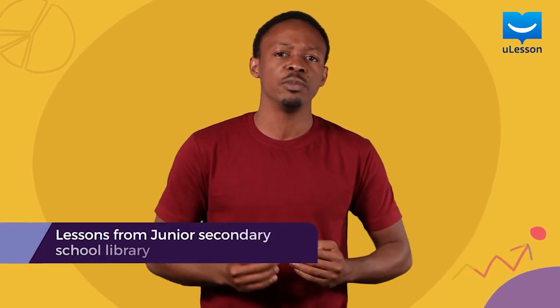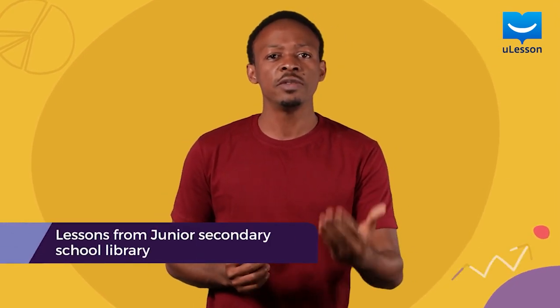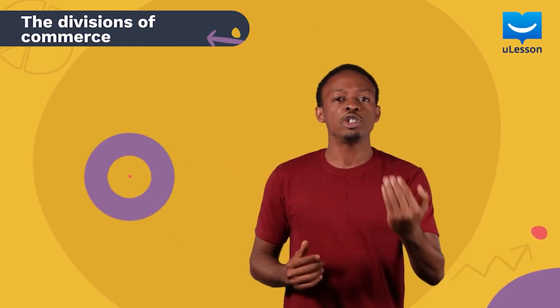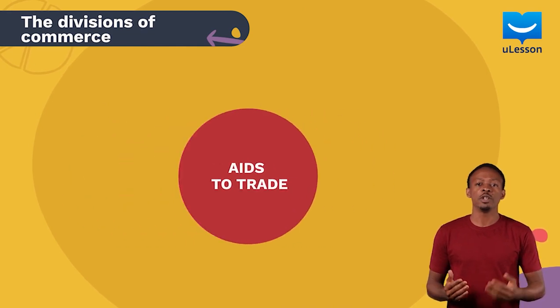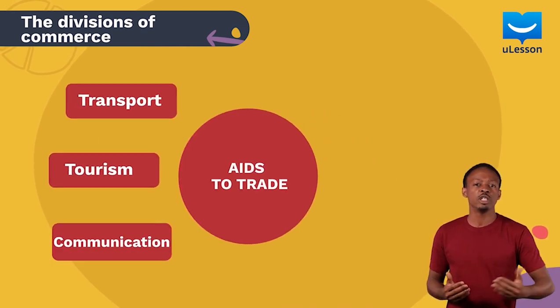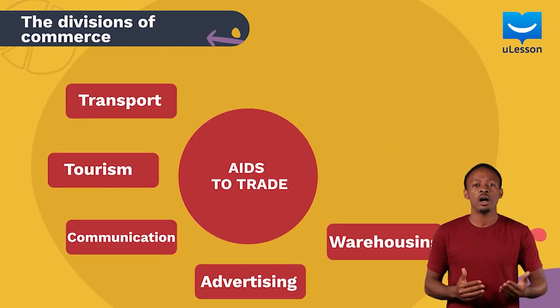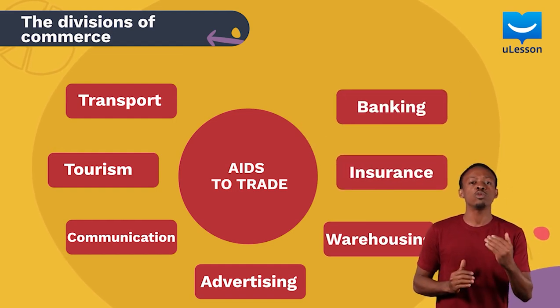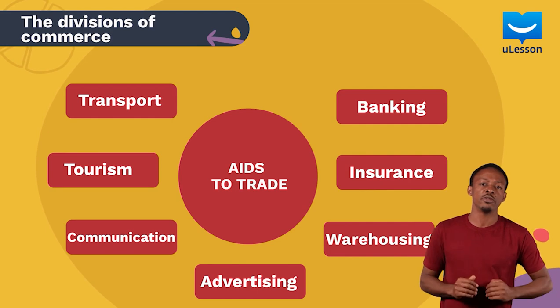Commerce, as we said in a previous lesson, involves all the activities that are involved in the buying and selling process, and all the activities at every stage become a source of livelihood for someone. Now who remembers all the divisions of commerce? They are trade and the aids to trade: transport, tourism, communication, advertising, warehousing, insurance, and banking. So why don't we look at one occupation from each division of commerce?